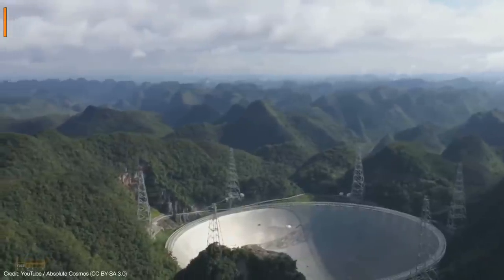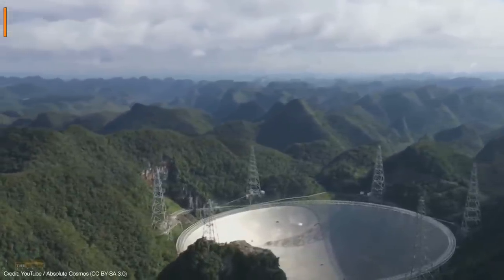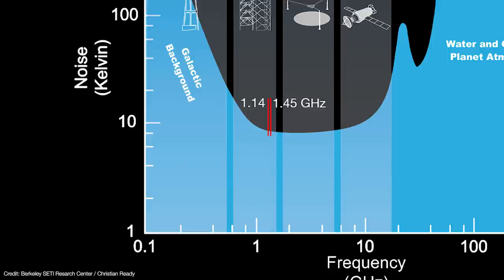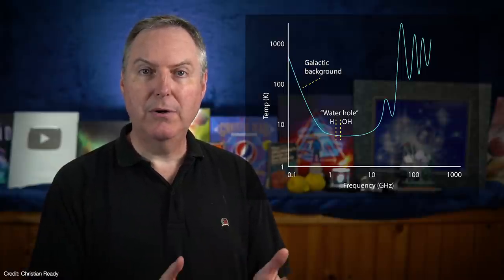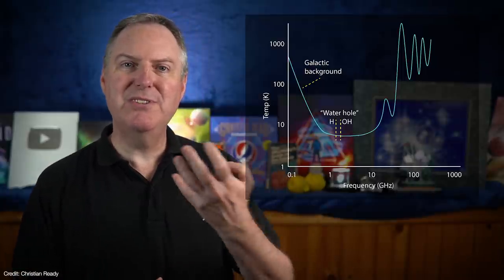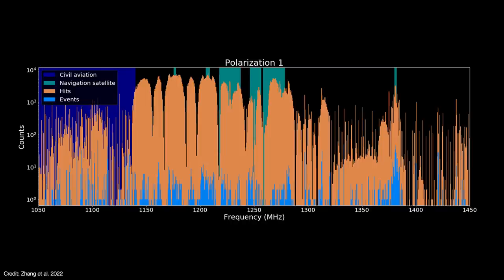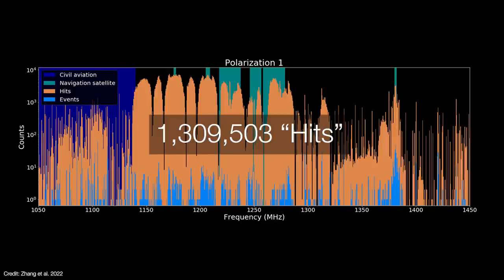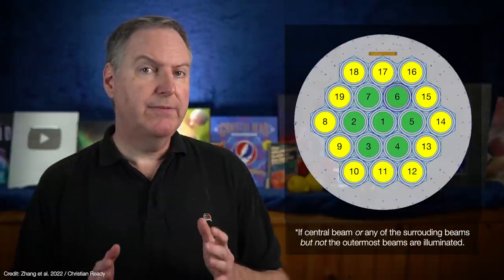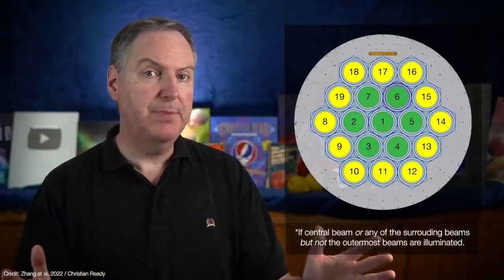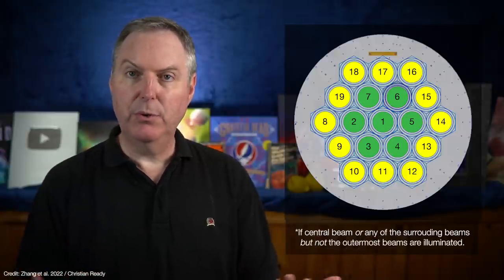In the 2020 survey, all observations looked for a narrowband signal drifting between 1.05 and 1.45 gigahertz. And that puts it within the range of frequencies that have very little natural background noise. It's also close to the classic waterhole range of frequencies that might be chosen to get the attention of water drinking civilizations like ours. Unsurprisingly, the team found a lot of signals within this range. Over 1.3 million of them. To narrow them down further, any signal that only illuminated the central beam but none of the outermost beams were promoted to events. And that brought the total down to a little over 2000 potential events.